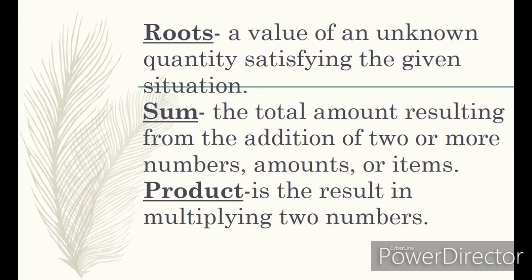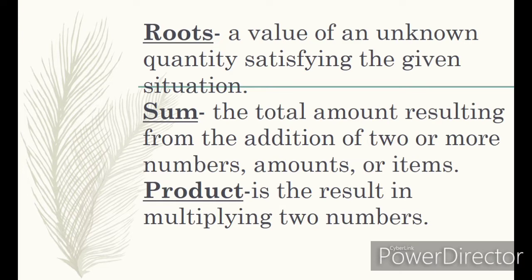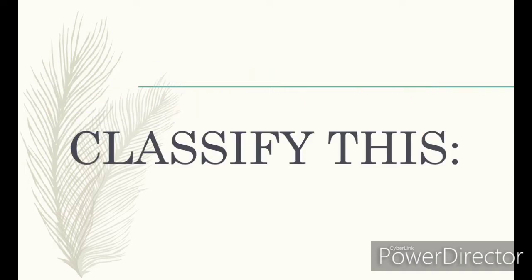Sum: the total amount resulting from the addition of two or more numbers, amounts, or items. Product: the result of multiplying two numbers. Squared: multiplying a number by itself. Perfect square: the product of a polynomial multiplied by itself.